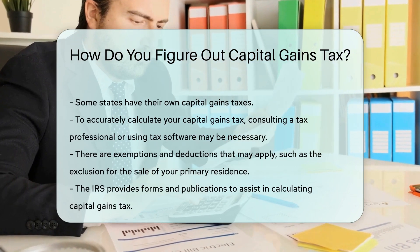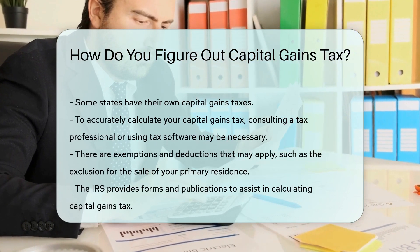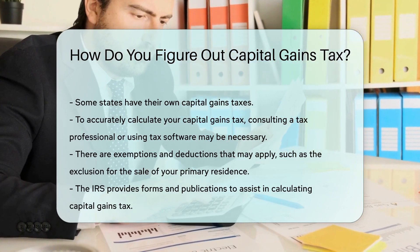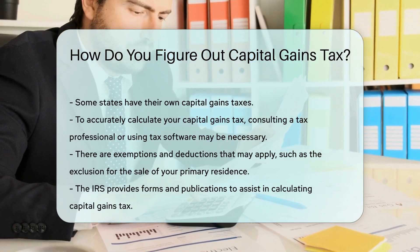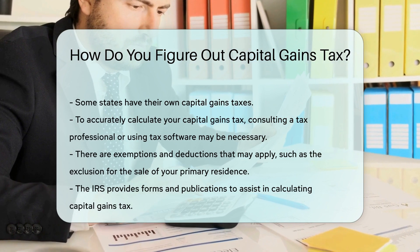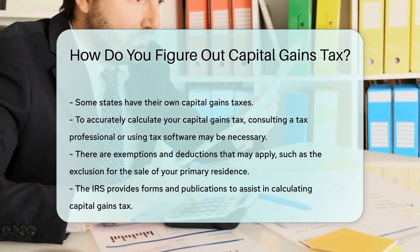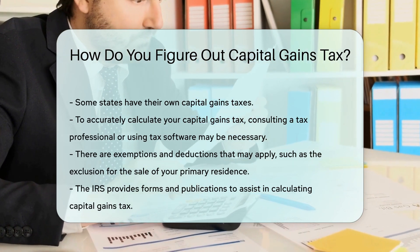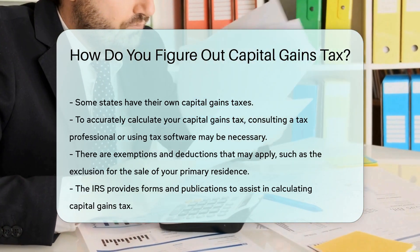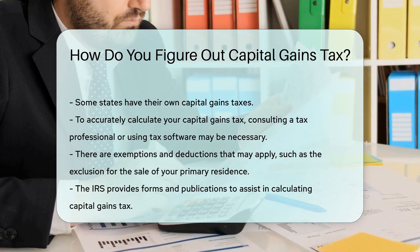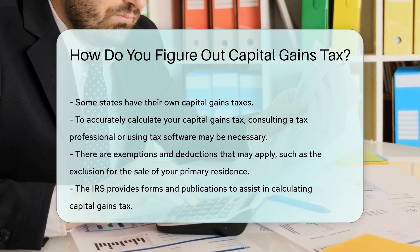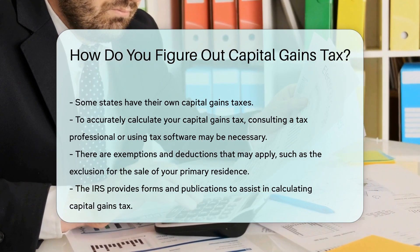There are also exemptions and deductions that may apply. For example, the sale of your primary residence may qualify for an exclusion. The IRS provides forms and publications to help you calculate your capital gains tax.